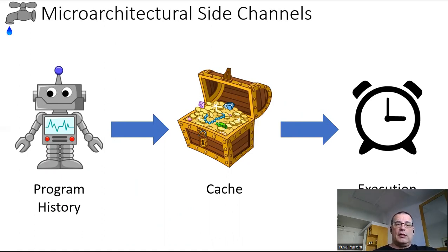In a side channel attack, what we do is we reverse the process. We measure the execution time of the program, and from that, we learn what happens in the cache. And from that, we can infer data about what happened in other programs that run on our computer. And this has been a known threat for the past two decades.